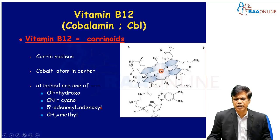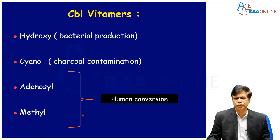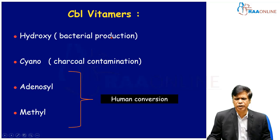Once they enter our system, our own cellular metabolism converts them into either adenosylcobalamin or methylcobalamin. They occur in various isoforms called vitamers. Bacterial production results in hydroxycobalamin, and charcoal contamination gives rise to cyanocobalamin, which are naturally occurring. The other two forms are made by human cellular metabolism.